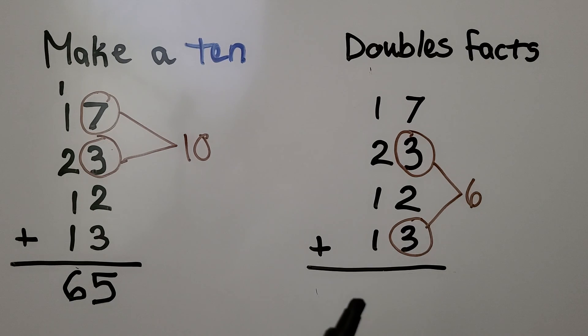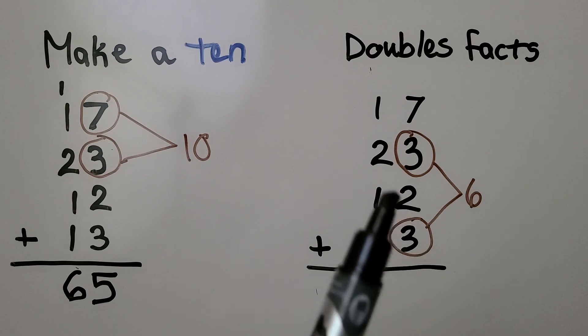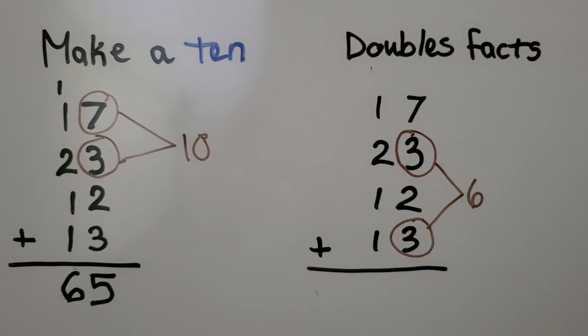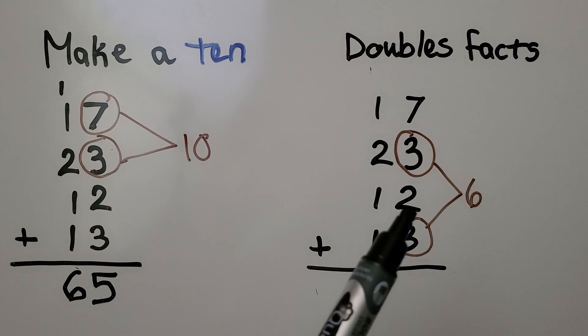We could also add doubles facts first. Here we have 3 plus 3, which is 6. Then we can add the 7. That's 13. And two more is 14, 15.